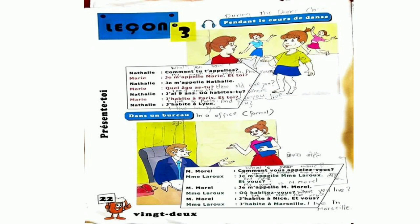Nathalie: Comment tu t'appelles? (What's your name?) Marie: Je m'appelle Marie. Et toi? (My name is Marie. And you?) Nathalie: Je m'appelle Nathalie. (My name is Nathalie.)